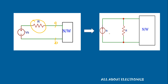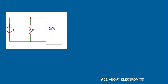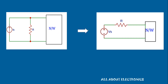Likewise, if we have a current source Is with a resistance R in parallel in any network, then that can be converted into a voltage source Vs with the same resistance R in series with this voltage source.